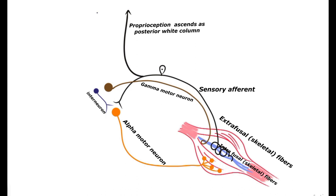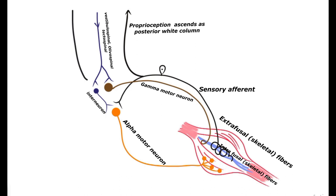We also have interneurons that may end on the alpha motor neuron or gamma motor neuron. There are many interneurons in the anterior horn cells, and these are fed by the descending corticospinal tracts. We also have the vestibulospinal tract, olivospinal tract, tectospinal tract, and reticulospinal tract, with ipsilateral and contralateral fibers ending on the gamma motor neuron or interneuron.